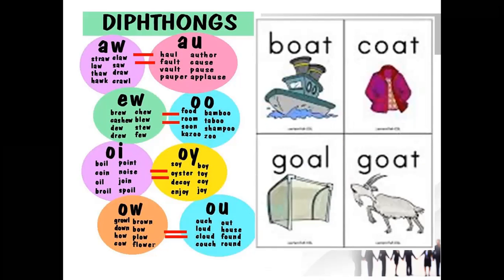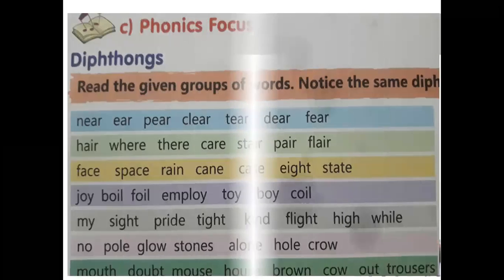Likewise, 'oa' also combines and gives one sound of 'o', for example board and court. In your book, the examples of some diphthongs are given. Notice the same diphthongs in each group. So 'ea' gives the sound of 'a'. Similarly, in all lines two diphthongs are given with one sound. Read it carefully and write it in your notebooks.